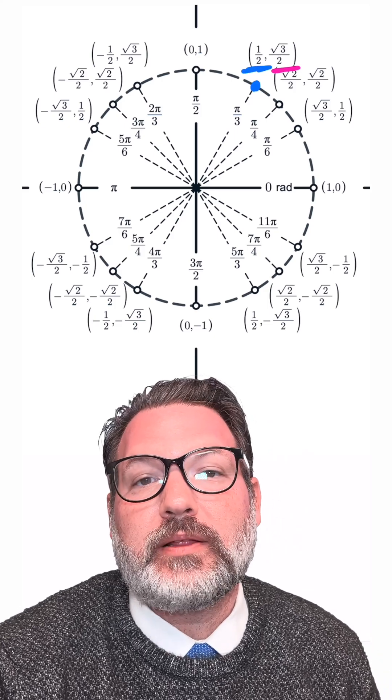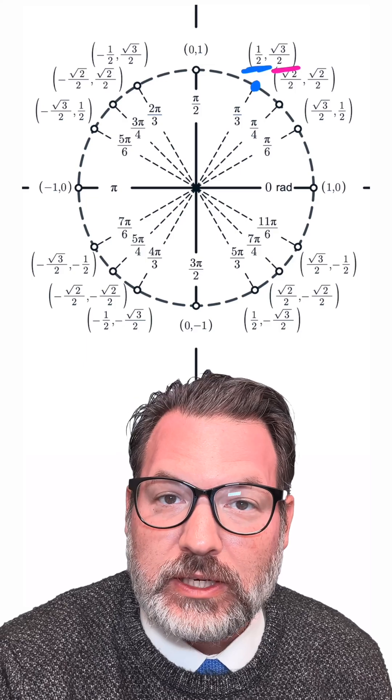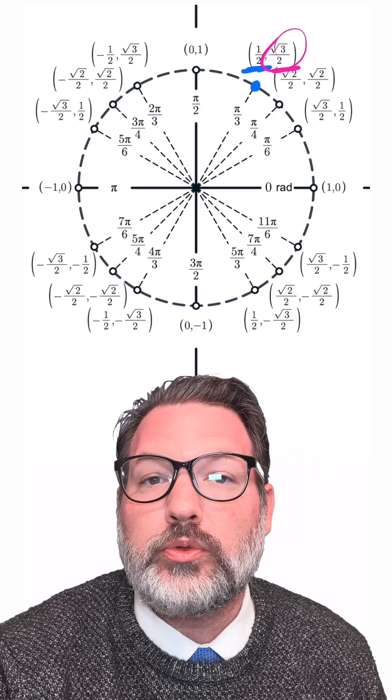The y-coordinate is going to give us back the sine of that same angle, so this is why we would say sine of pi over 3 or sine of 60 degrees is equal to root 3 over 2.